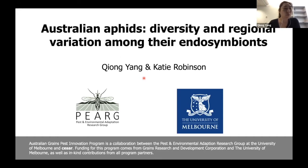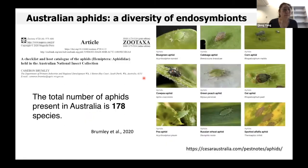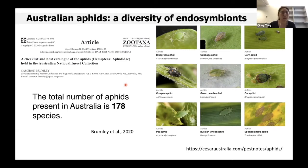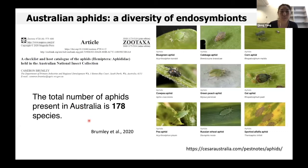This work is part of the Australian Grains Pest Innovation Program funded by GRDC. Everyone knows that aphids are a serious agricultural pest in Australia. They damage crops not only through direct feeding, but also by the transmission of plant viruses. Following Brumley's checklist published in 2020, as well as two new species just confirmed very recently, the total number of aphid species present in Australia is 178 species.